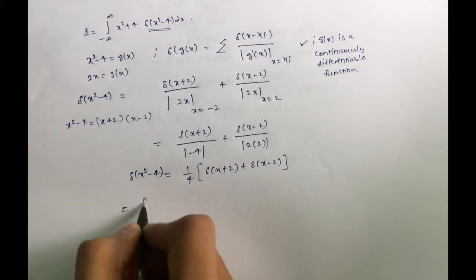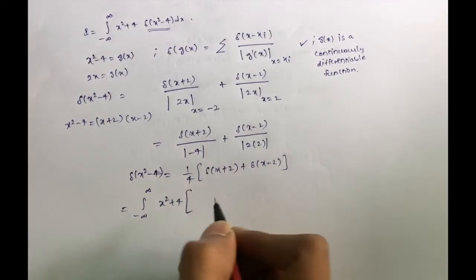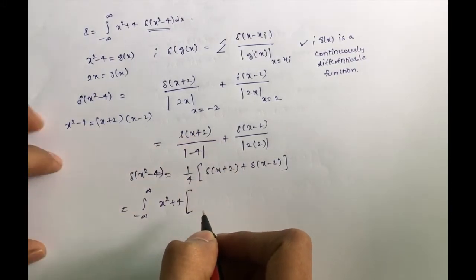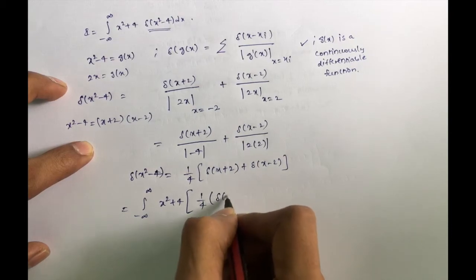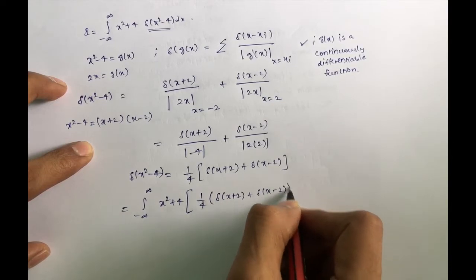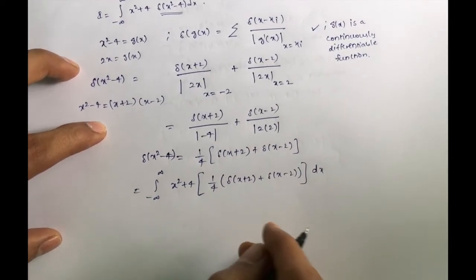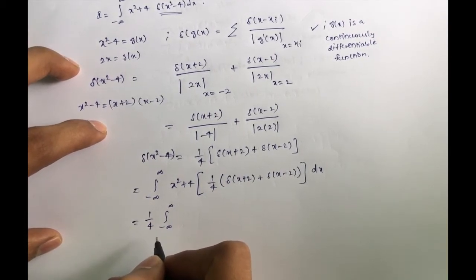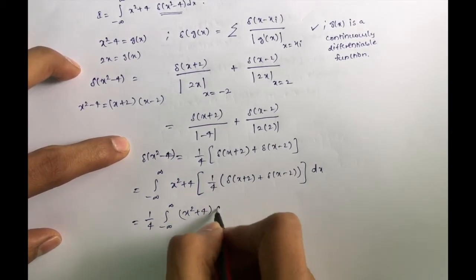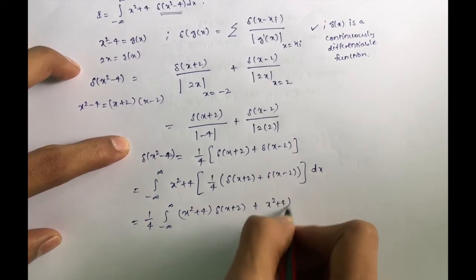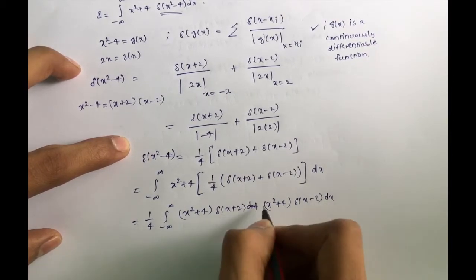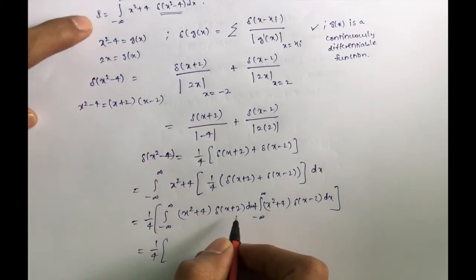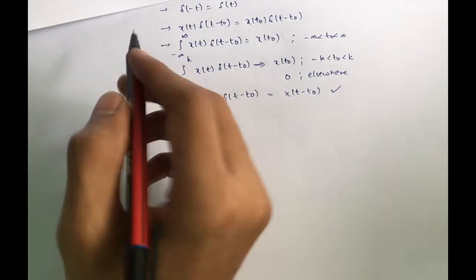Now things become easier. The integral from -∞ to ∞ of (x² + 4) · δ(x² - 4) dx becomes the integral of (x² + 4) · (1/4)[δ(x + 2) + δ(x - 2)] dx. Taking (1/4) outside as a constant, we expand: (x² + 4) · δ(x + 2) + (x² + 4) · δ(x - 2), and separate into two integrals.